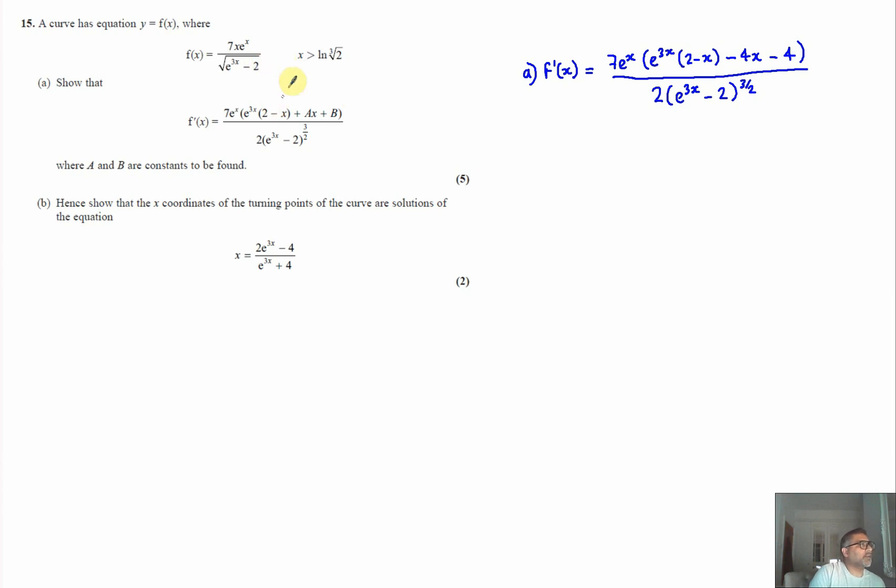Okay, now part B. In part A we showed that this function can differentiate to give you a derivative in this format where a and b were minus four and minus four. So we now know what the derivative from part A. Part B says hence show that the x coordinates of the turning points of